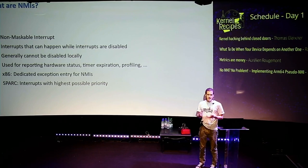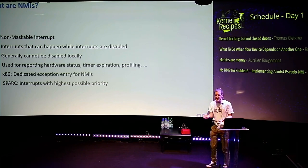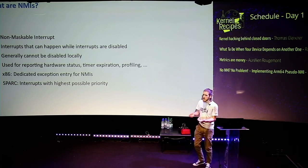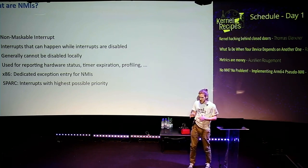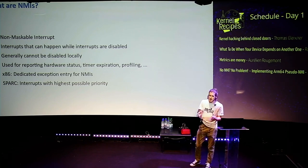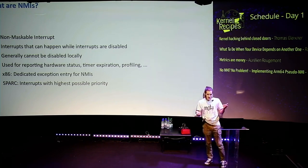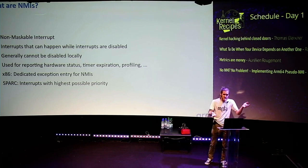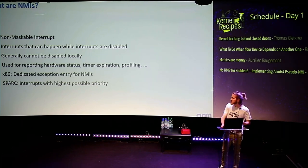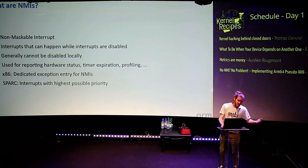For the rest, they are pretty much architecture-specific. x86 does it one way where it's a completely separate exception entry — you have one handler for the NMIs, and when you come from that handler, you know you had an NMI. For SPARC, it's just some interrupts but they have a special priority. The highest priority means it's an NMI and you cannot mask it — although in the latest versions of SPARC, I believe you can actually mask non-maskable interrupts, but that's another detail.